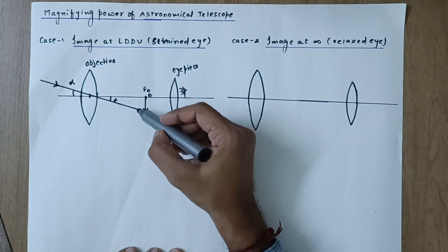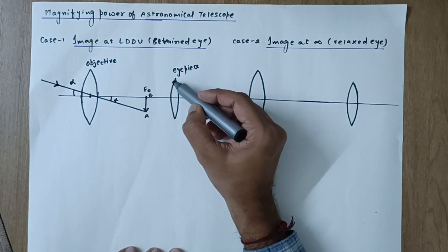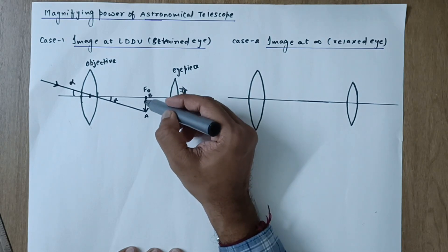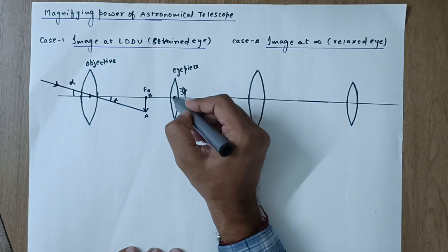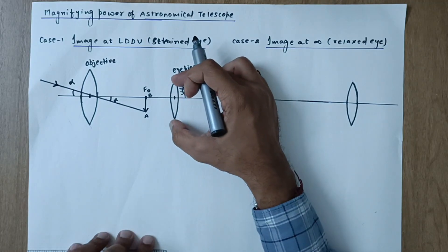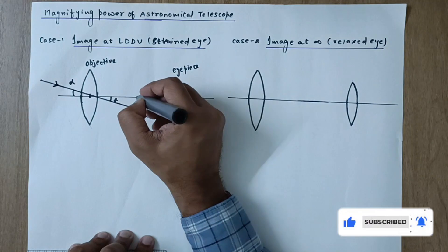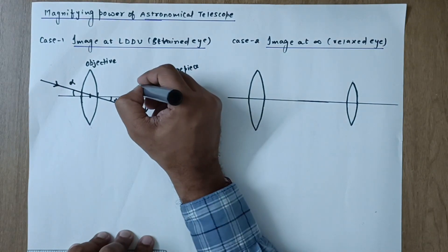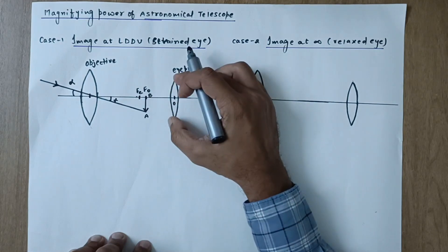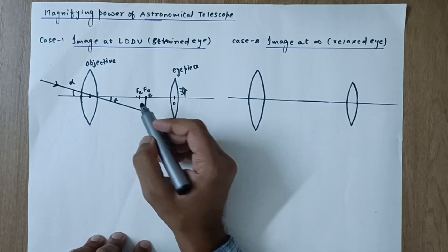The rays continue from the intermediate image AB and strike the eyepiece lens, so this image AB behaves as an object for the eyepiece. Case 1: we are going to form the final image at the least distance of distinct vision (LDDV). The eye is very close to the eyepiece. The eyepiece can be moved left or right and is adjusted so that image AB, acting as an object, falls between O and fe of the eyepiece.